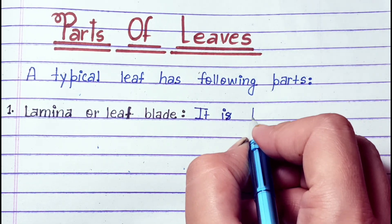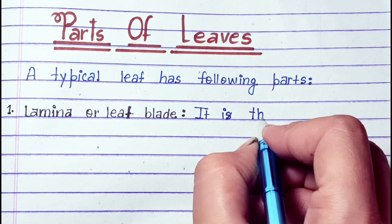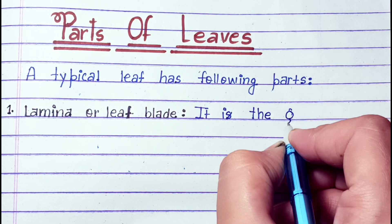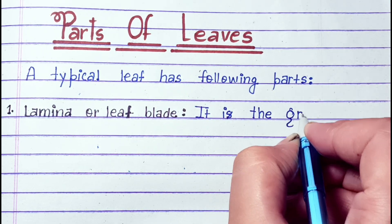A typical leaf has the following parts. First is lamina, or leaf blade.